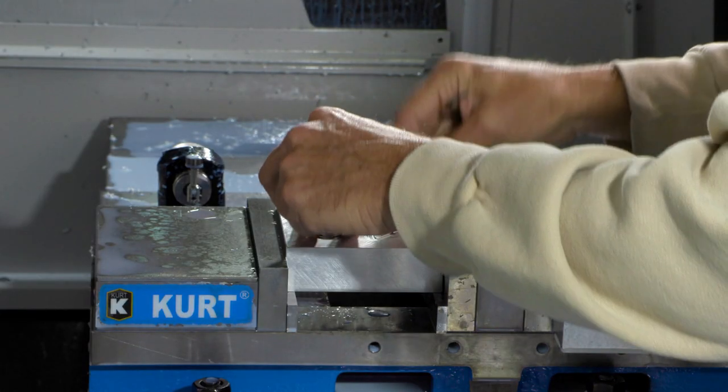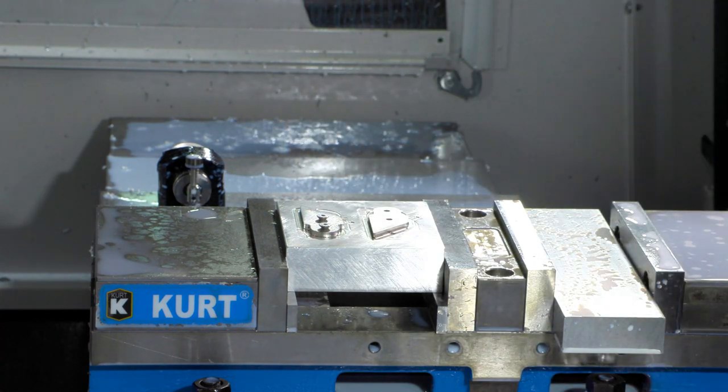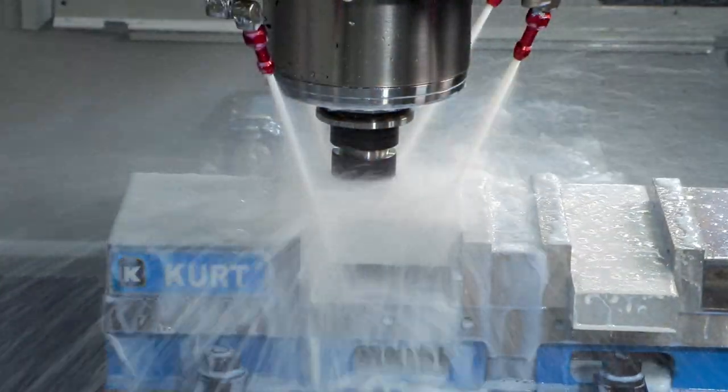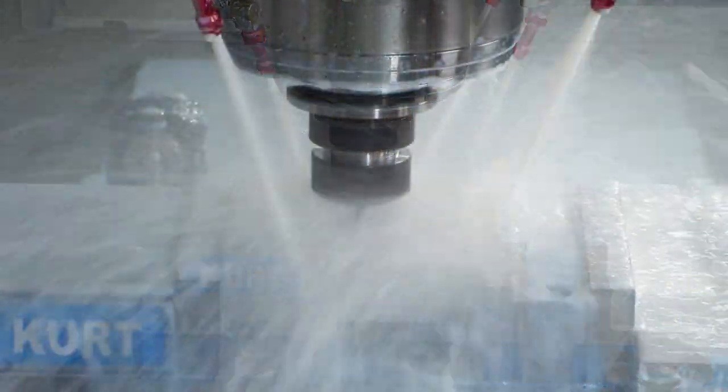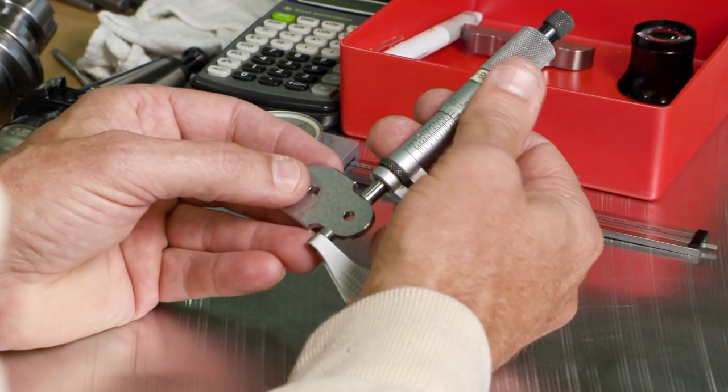Next, the corner pivot point is precision machined from stainless steel on a CNC mill and is hand inspected for tolerance.